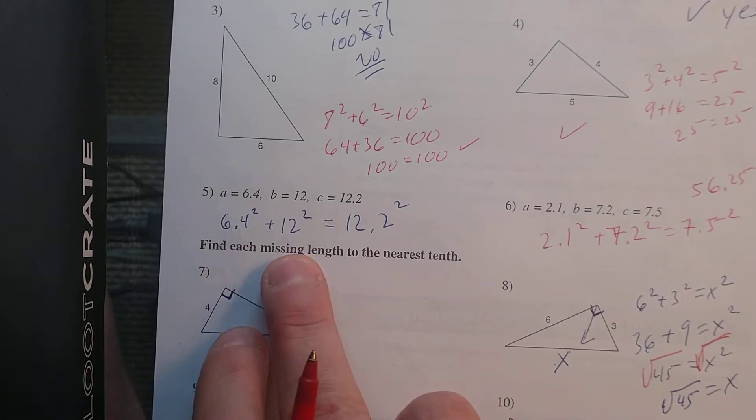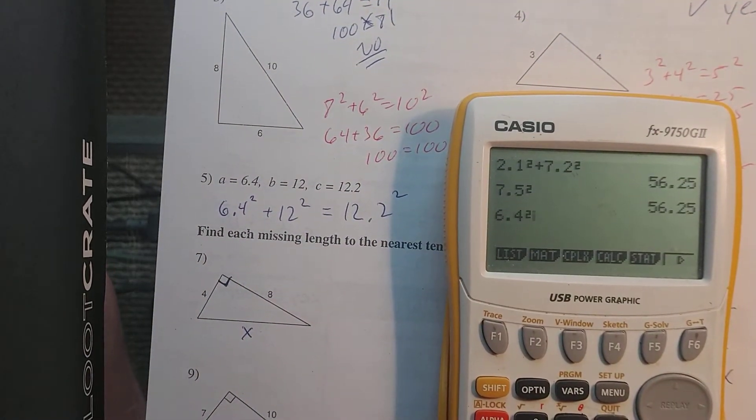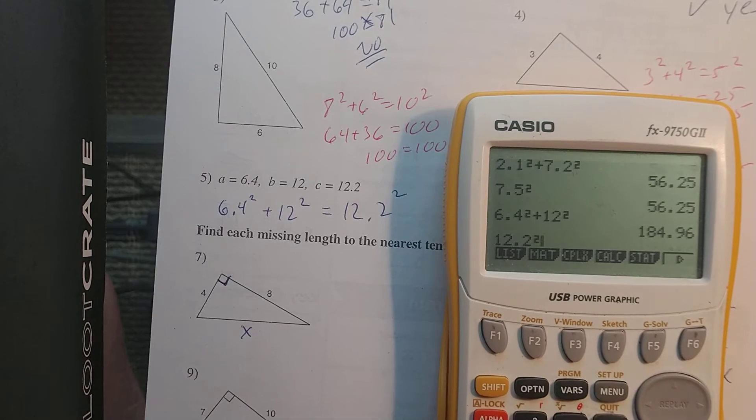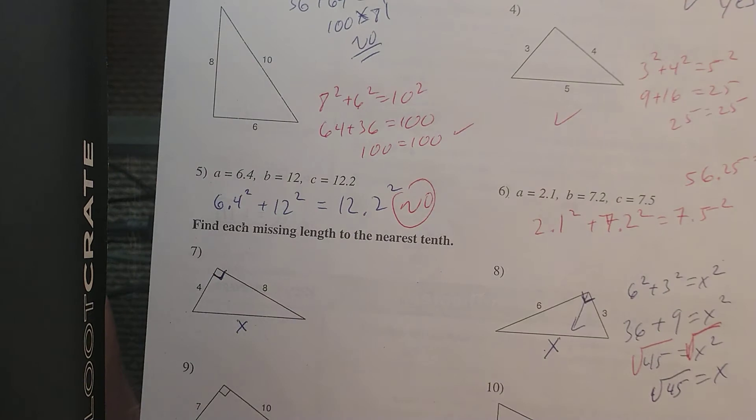And then if I didn't give you a solution for this one, 6.4² + 12² is 184.6, and then 12.2² is 148. So this is no.